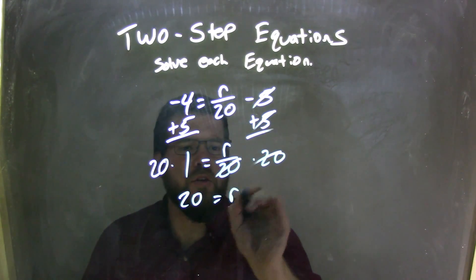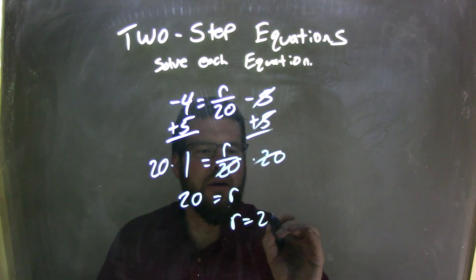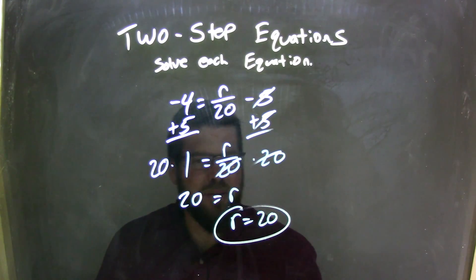So, 20 equals r. Let's rewrite this to make it look nicer. r comes first, so r equals 20, and that is my final answer.